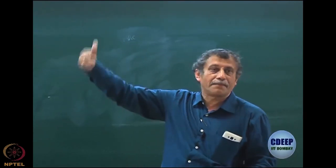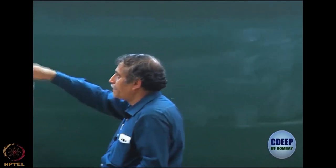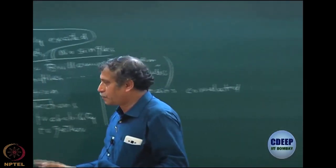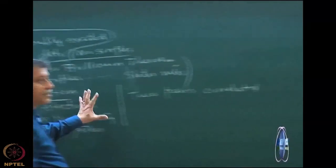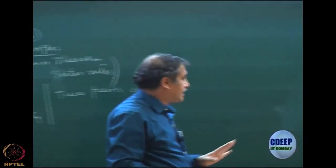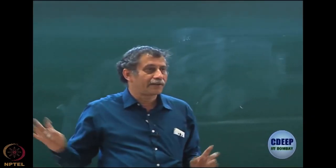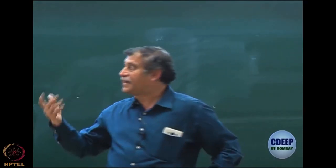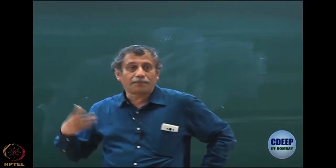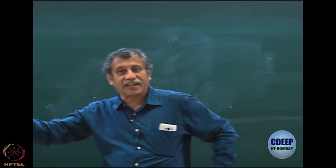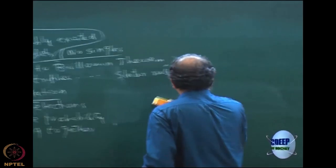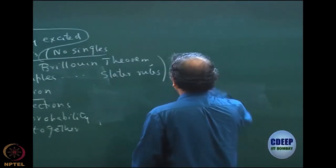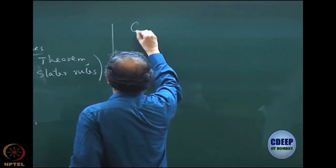Perturbation theory tells the same thing — you have a preponderance or importance of doubly excited determinants and you do not have singles and triples. But pair theory goes much beyond simple perturbation theory because it also says that two pairs or three pairs can be correlated, which is absent in perturbation theory unless you go to higher-order perturbations like MP3, MP4. At MP2 you do not see those effects. Sinanoglu's theory eventually leads to what is called coupled cluster theory, which we will do much later.